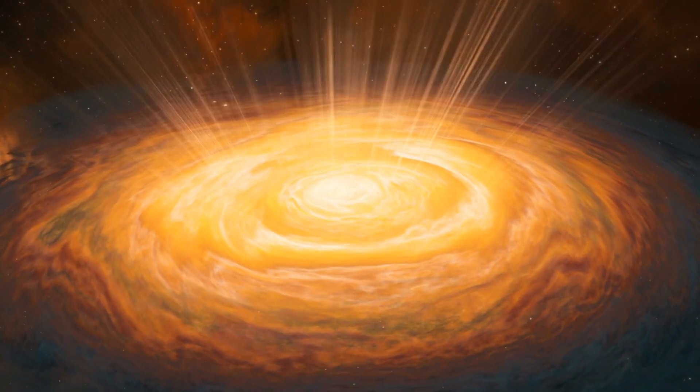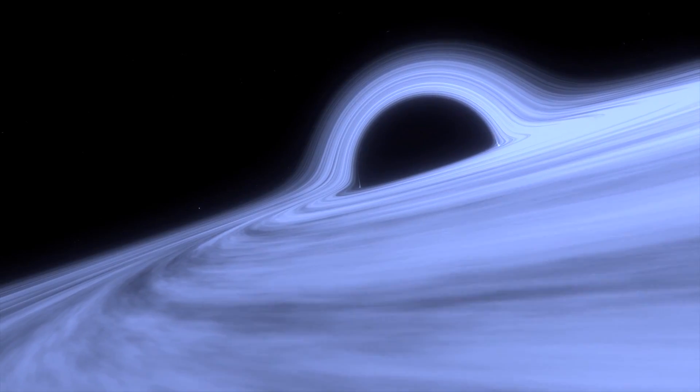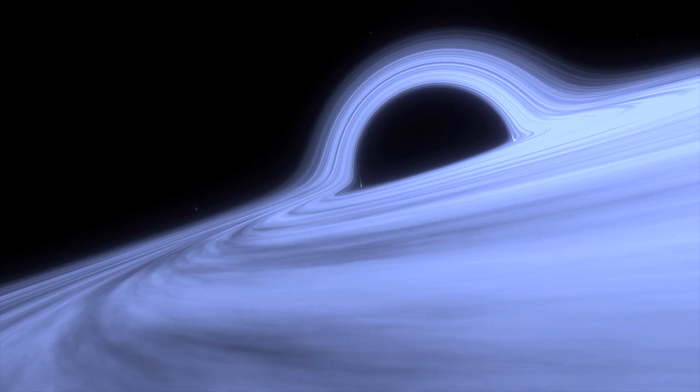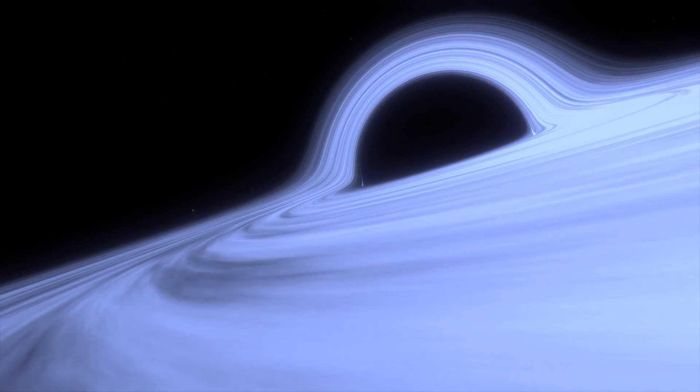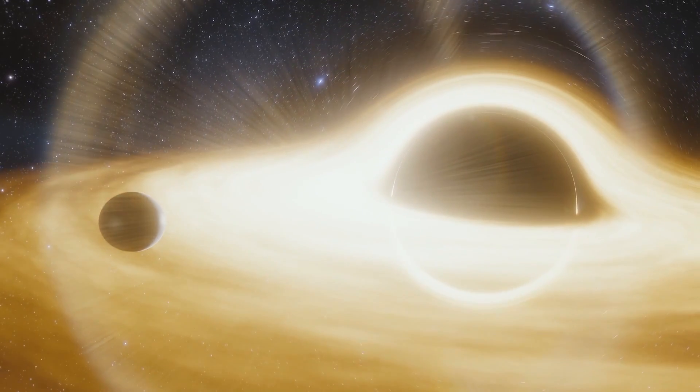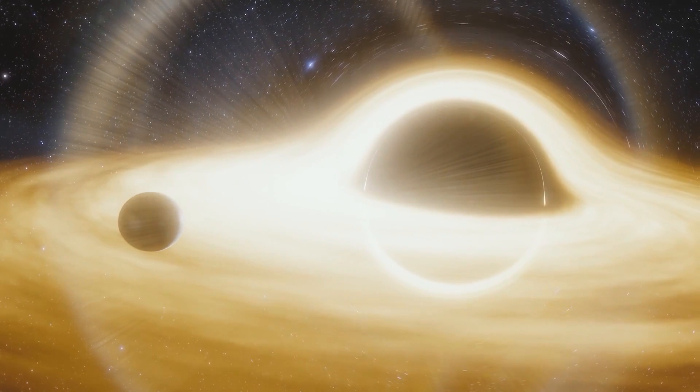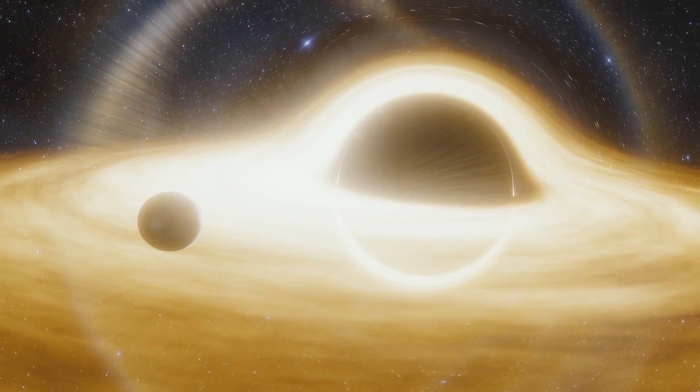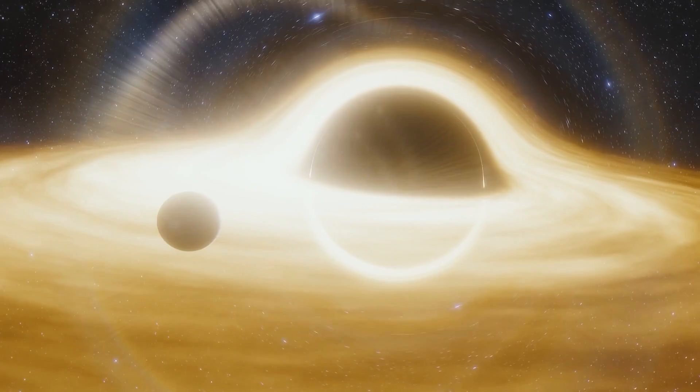Who says light can't escape it? Well, now we have another argument about nothing being able to escape a hungry black hole. This is because astronomers captured a neutron star in an elliptical orbit around a black hole that survived being swallowed completely.